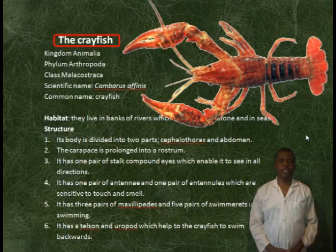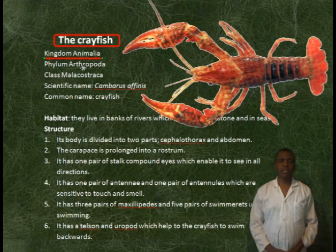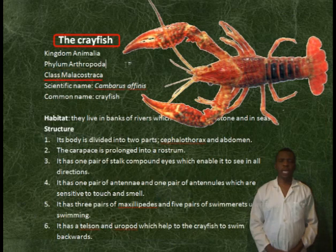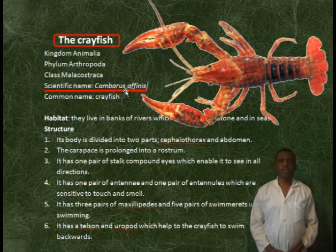The crayfish. Kingdom: Animalia. Phylum: Arthropoda. Class: Malacostraca. Scientific name: Cambarus affinis. Common name: crayfish.